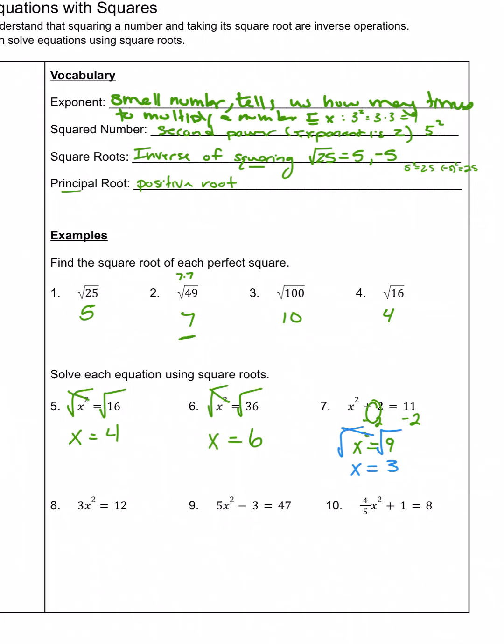On number 8, again, the x squared is not by itself yet. We've got it being multiplied by 3. The opposite is to divide by 3. So we do that on both sides. 3 divided by 3 is 1, so it cancels each other out. There's my x squared. And that is now equal to 4. Now that the x is by itself, I can get rid of that square by taking the square root. And the square root of 4 is 2.